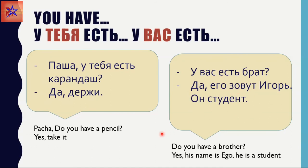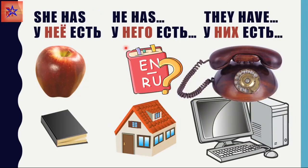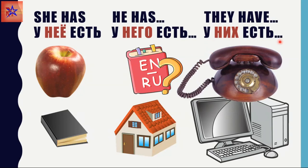Он студент. And at last, the last three forms. She has: У неё есть. For example, У неё есть яблоко, У неё есть книга. He has: У него есть. У него есть словарь. У него есть дом. And finally, they have: У них есть телефон. У них есть компьютер.